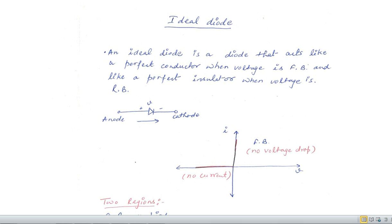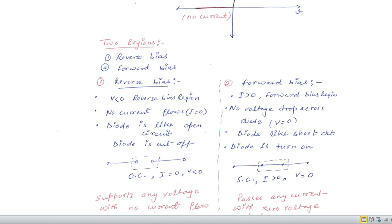There are two regions of operation of the ideal diode: the reverse bias and the forward bias. The condition of reverse bias is V is less than 0 and the condition of forward bias is I is greater than 0.